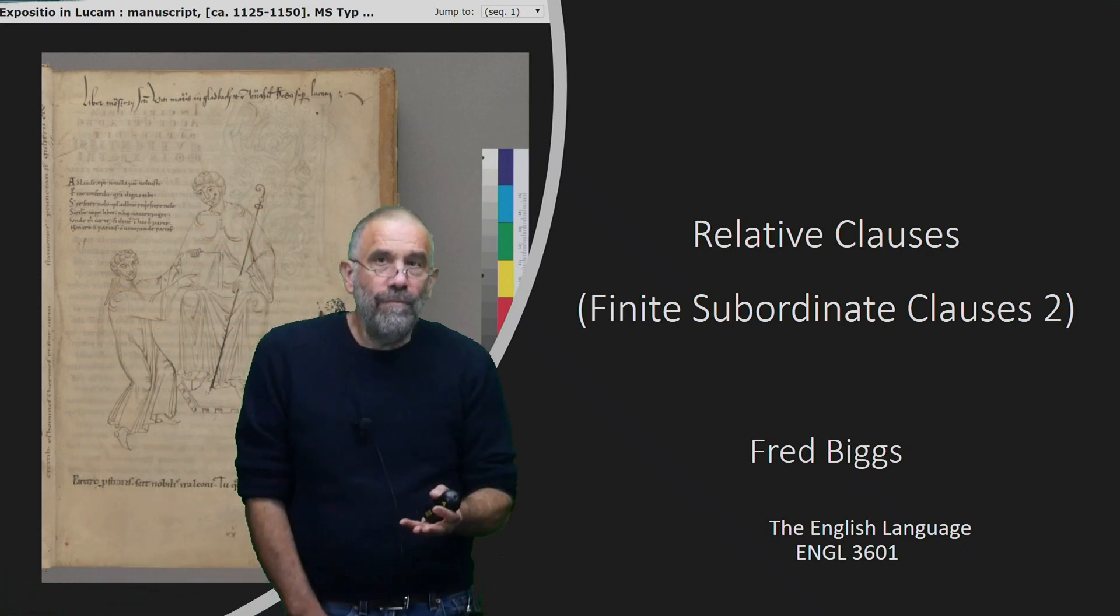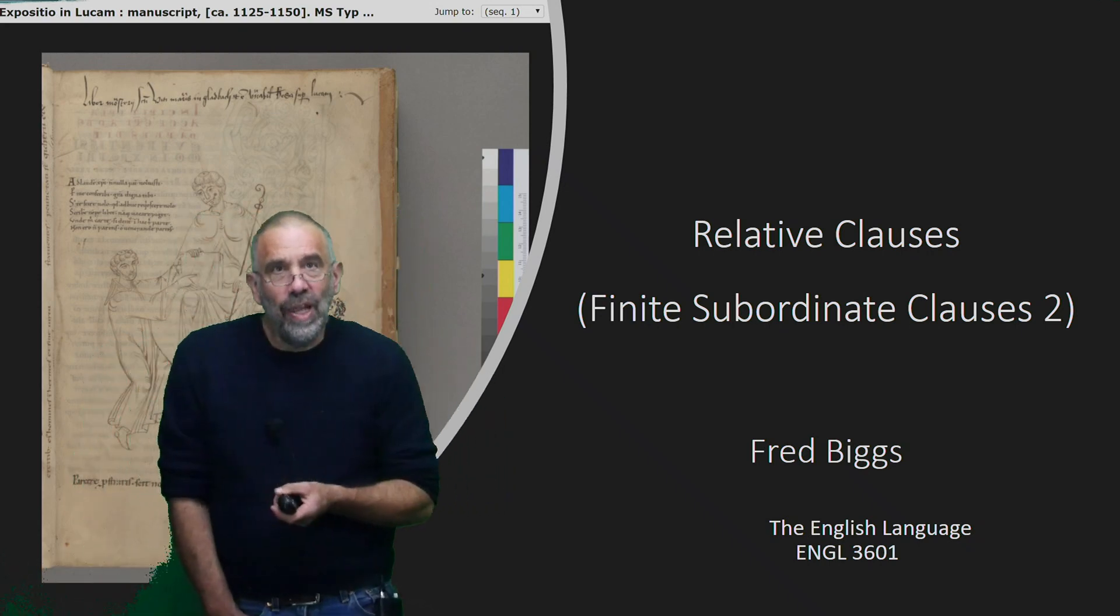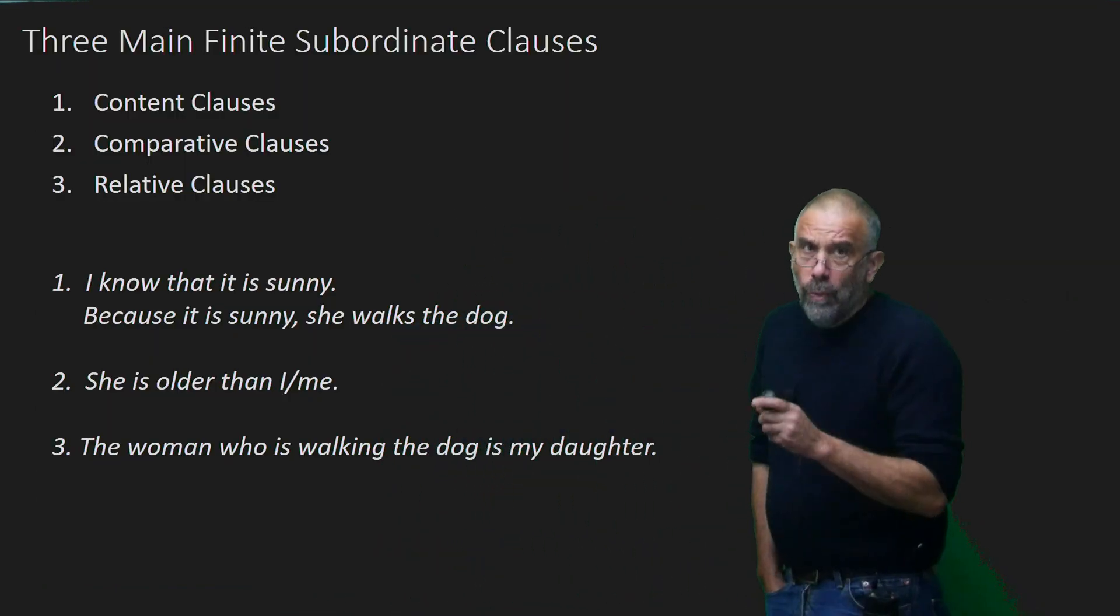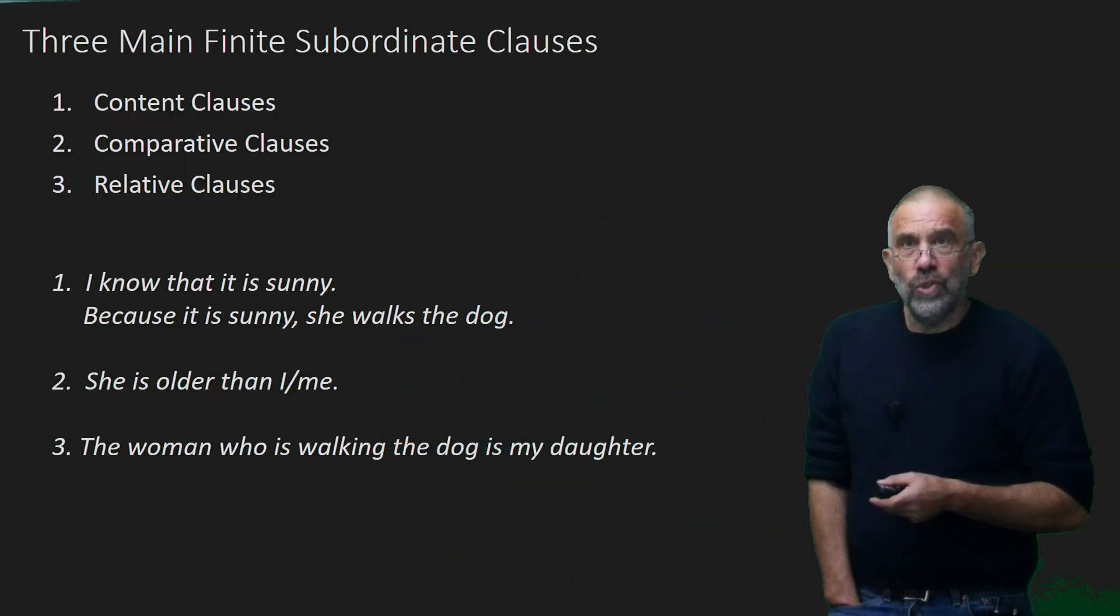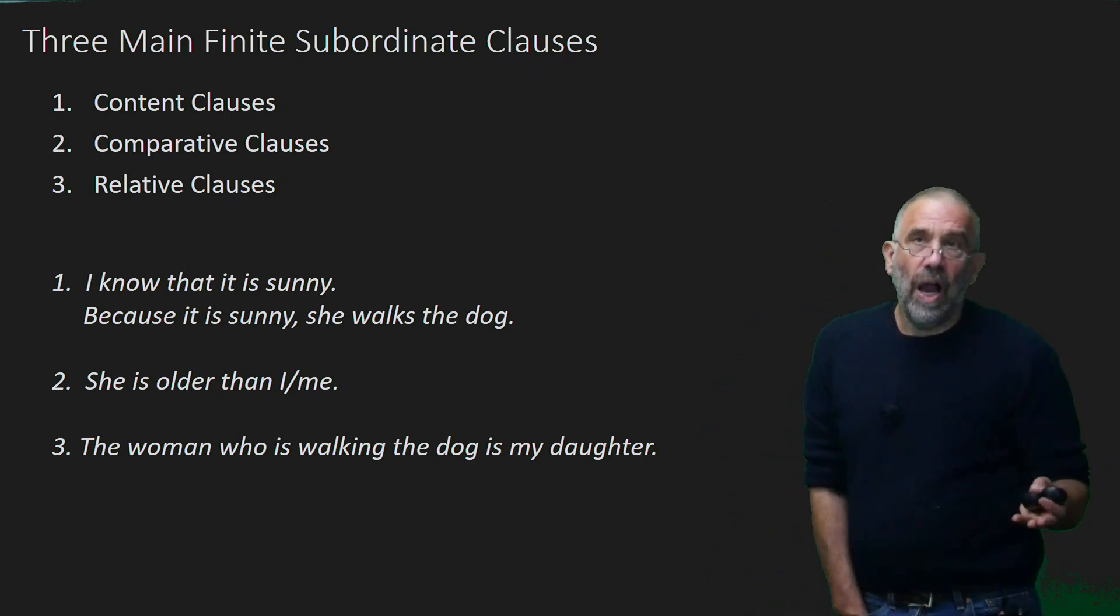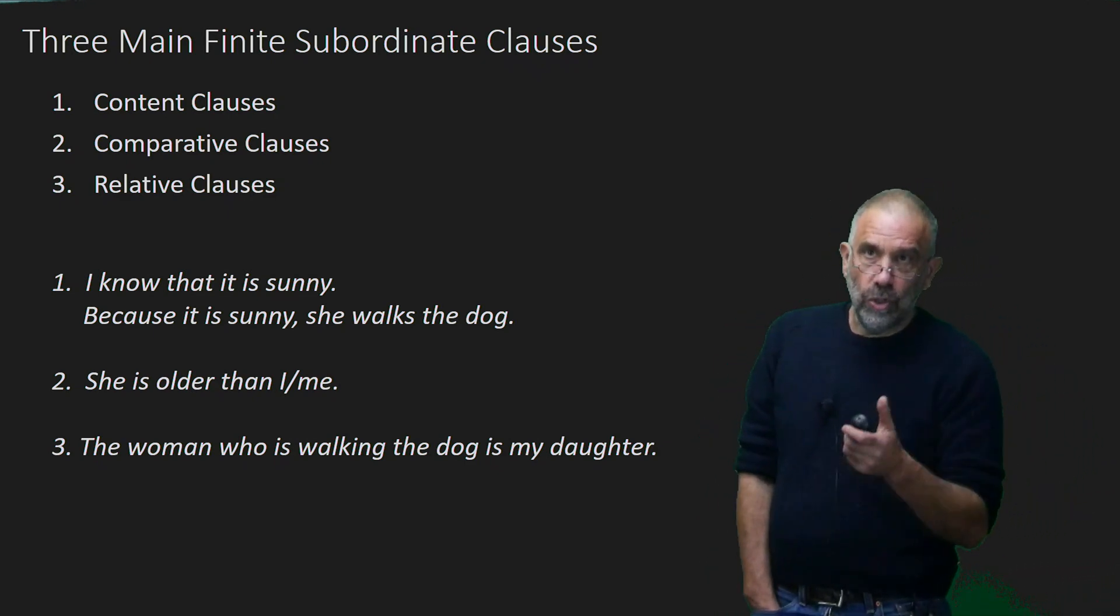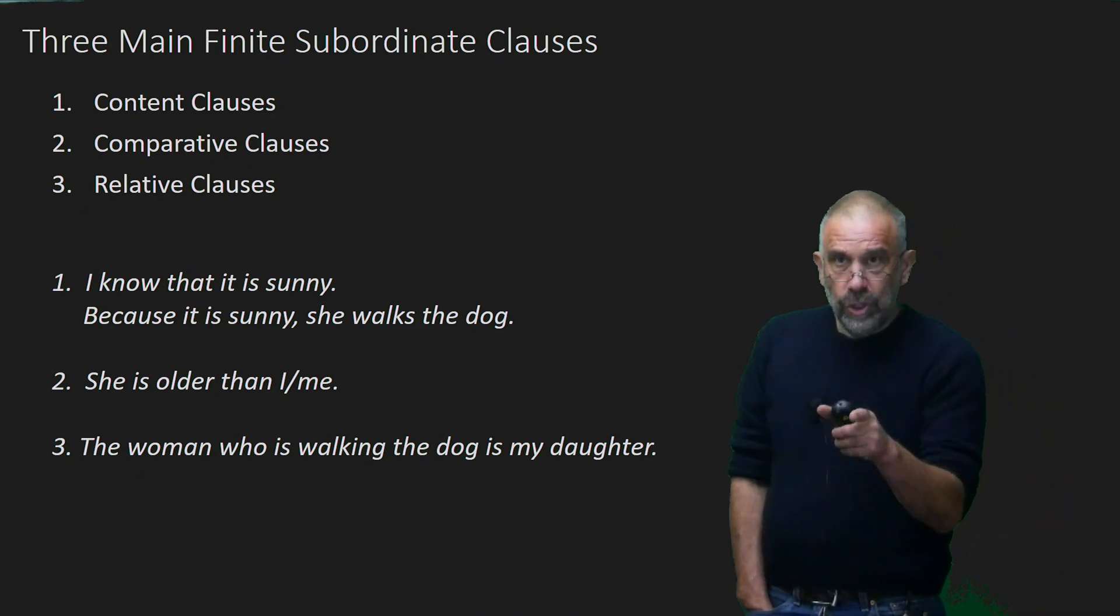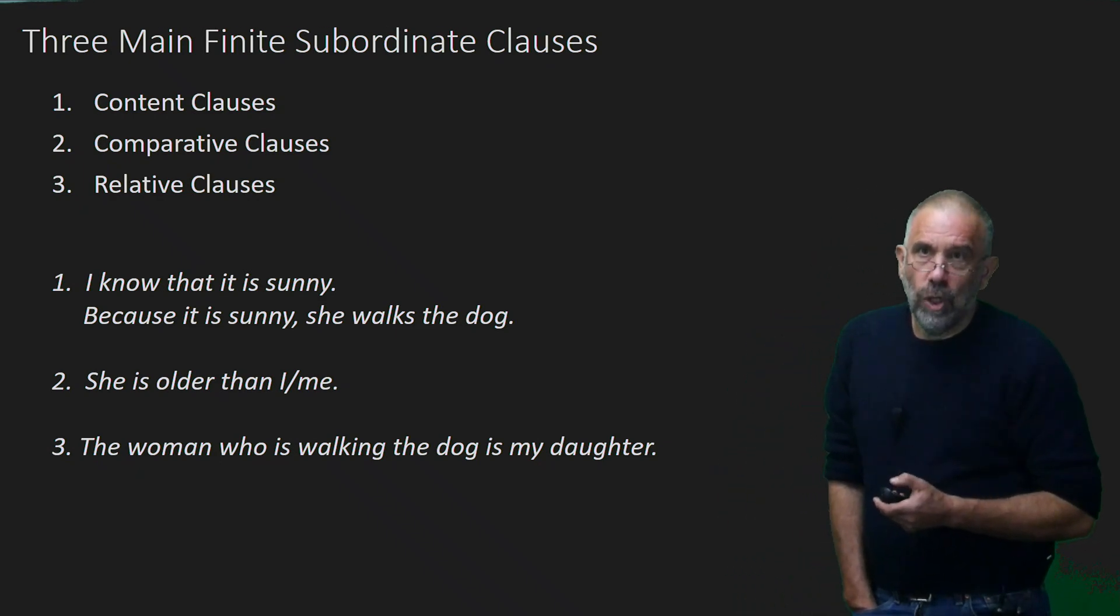So we've got to deal with relative clauses today. This is our second lecture on finite subordinate clauses. What you remember from last week is that there are three main kinds of these finite subordinate clauses. We've talked about content, we've talked about comparative, and now it's time to talk about relative clauses.